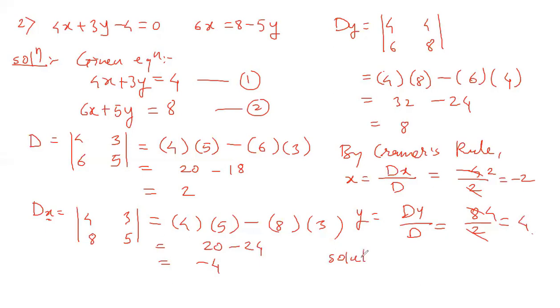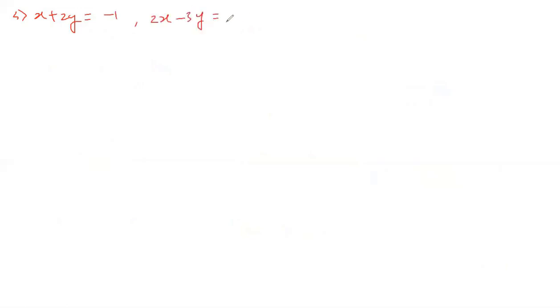Therefore, the solution for x and y is minus 2 and 4. This is the required solution of the given simultaneous equations using Cramer's rule.